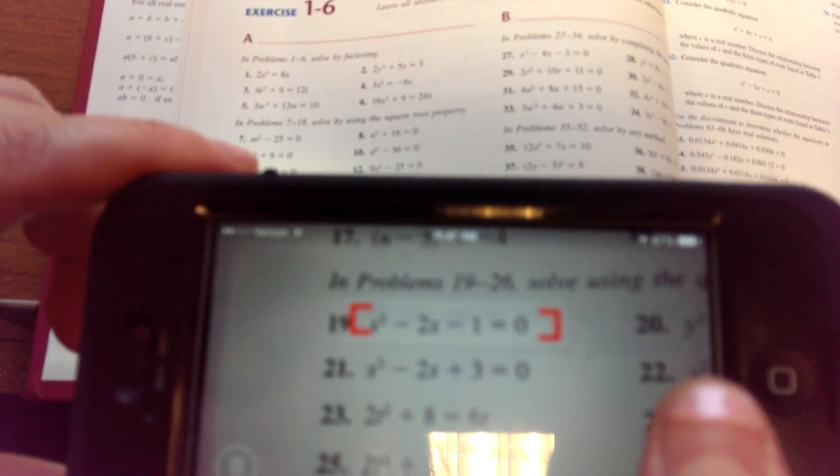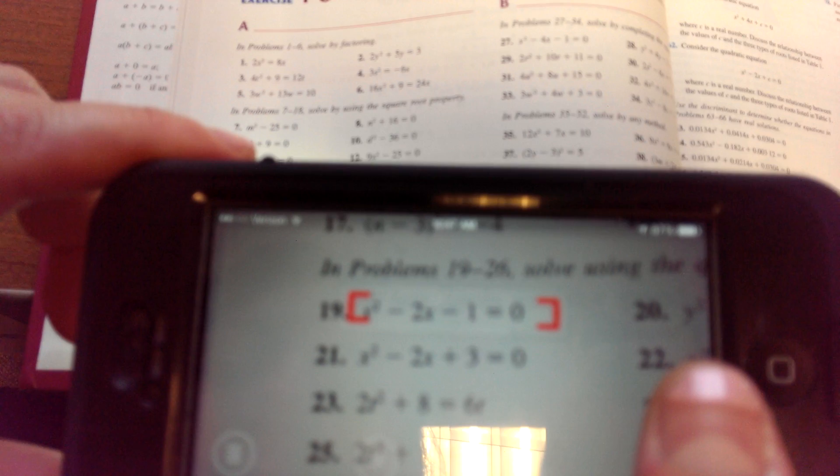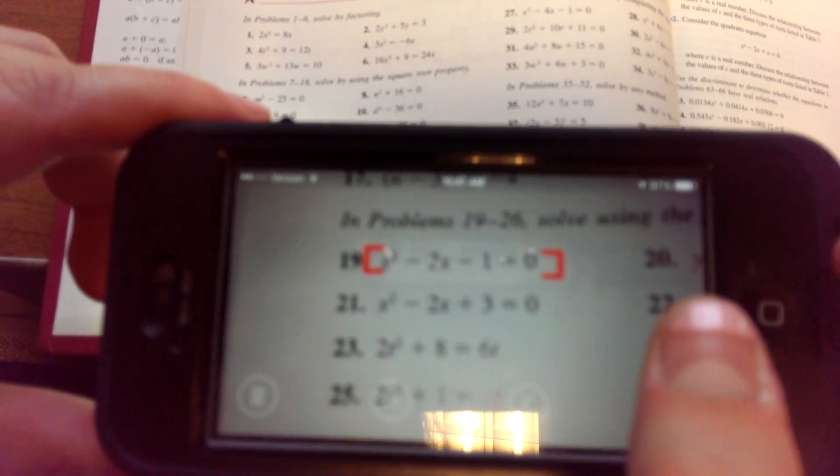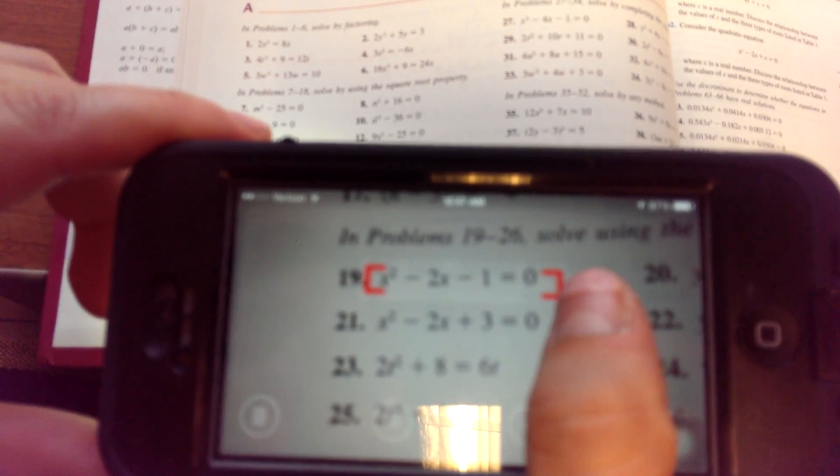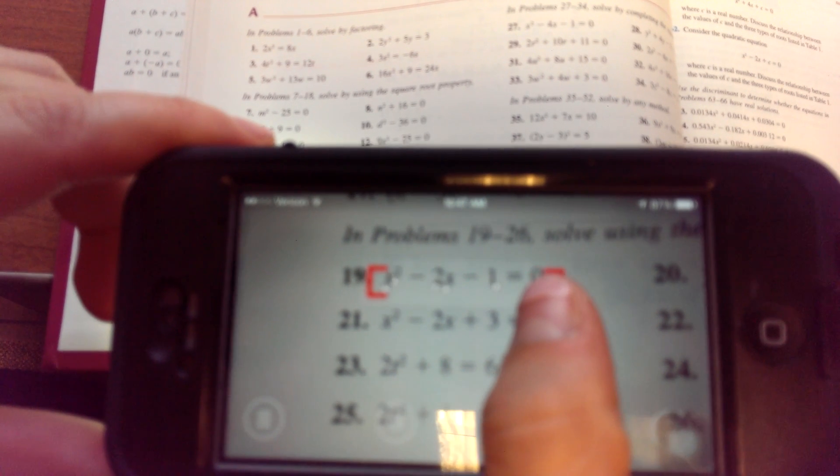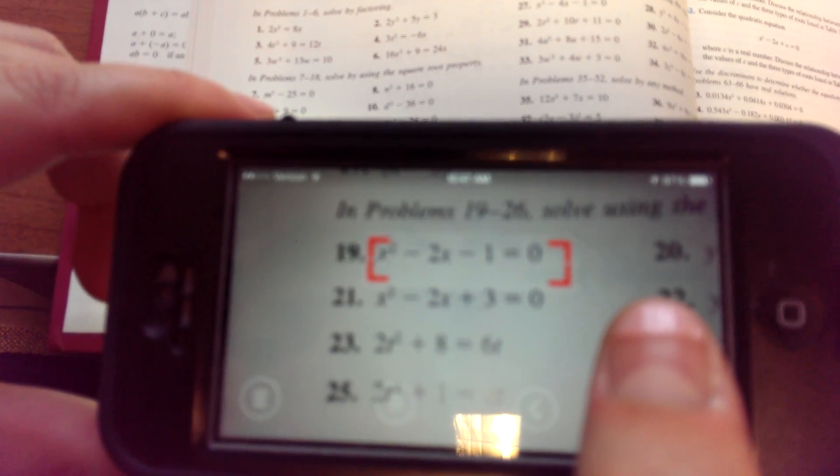So, let's make it a little smaller so we can capture just the problem we want. I have a feeling it will just give us x squared minus 2x equals 1 though. Do you need to be wider? How about that?